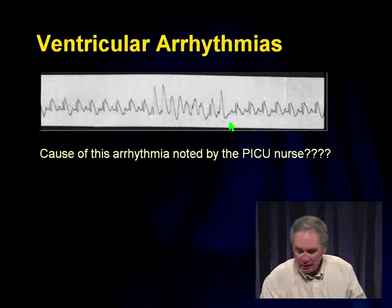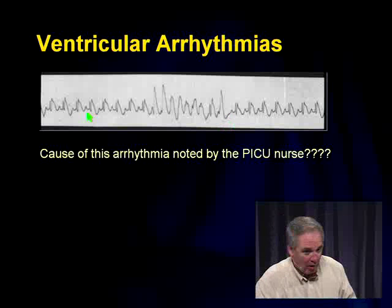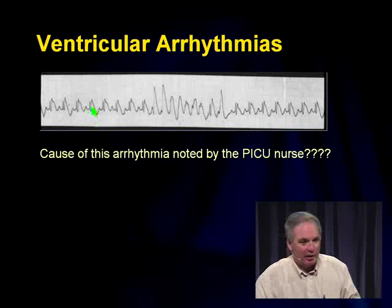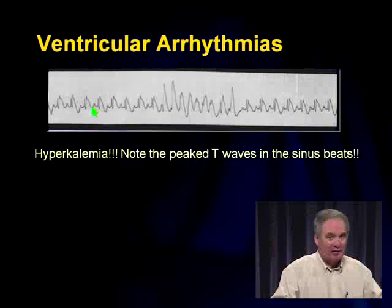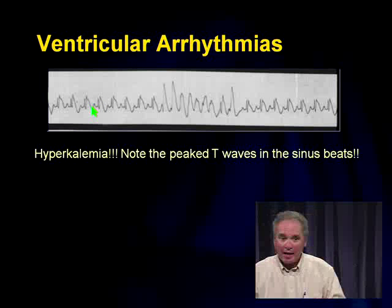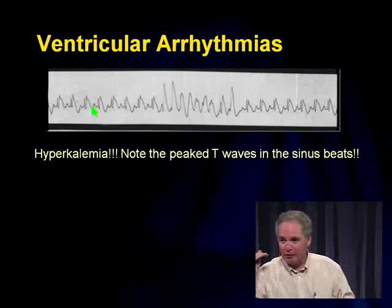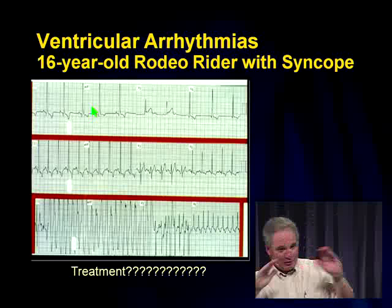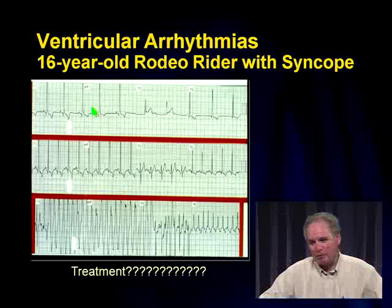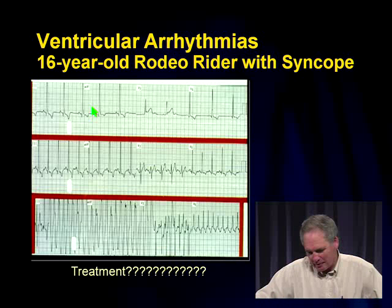Another case: a child in the PICU — the nurse calls about wide QRS complexes. Ask why the child is in the unit. Looking at the EKG, there are normal sinus beats with peaked T waves — this is a ventricular arrhythmia secondary to hyperkalemia. This child doesn't need cardioversion, lidocaine, or amiodarone — they need their potassium lowered. Always ask what's going on to treat ventricular arrhythmias correctly.